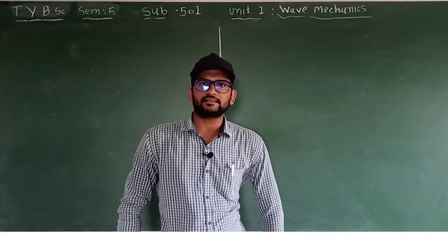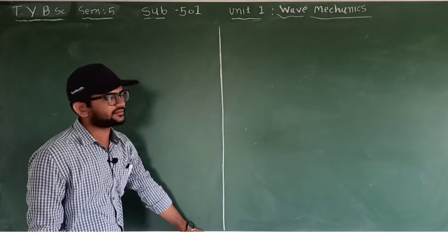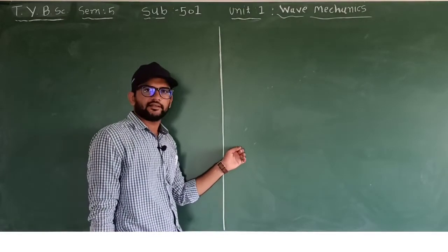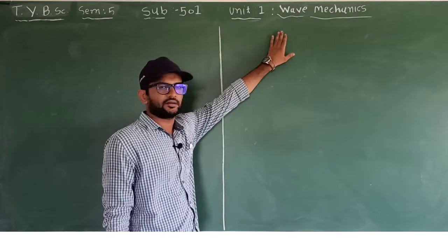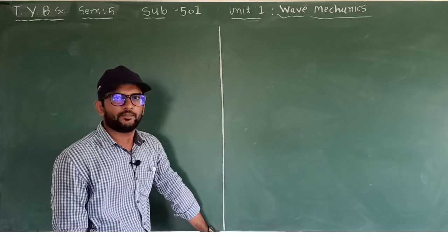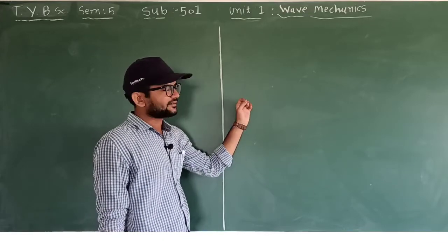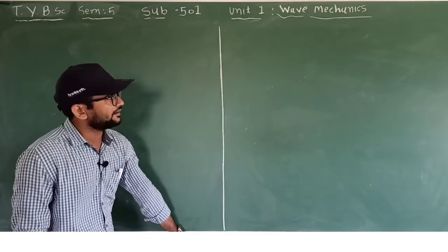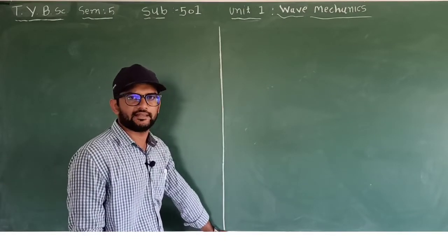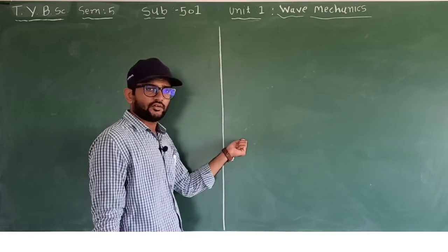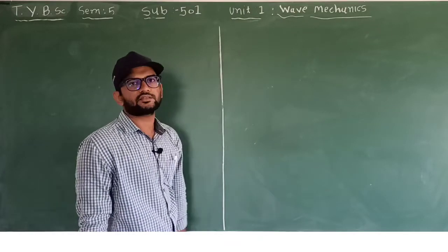Hello friends, welcome to this online lecture series. This is the 10th lecture of Unit 1, Wave Mechanics. In our previous video, we studied normalization and orthogonality conditions for particle in a one-dimensional box. We completed two main theories: first, operators and different types of operators (lectures 1 to 5, covering 8 types), and second, particle in one-dimensional box (lectures 6 to 9).